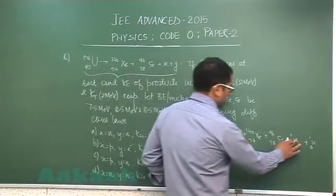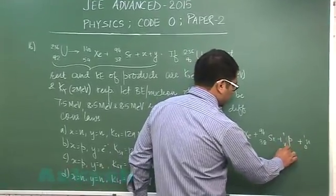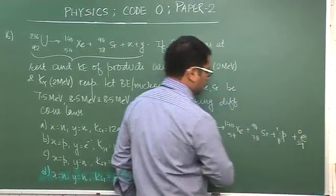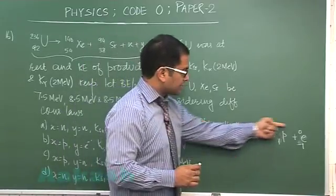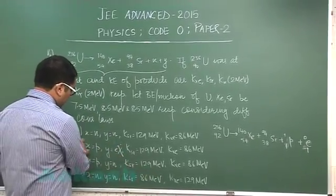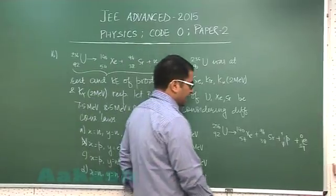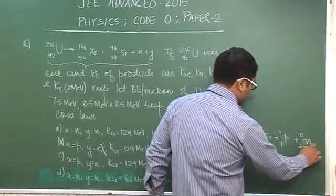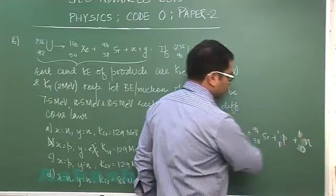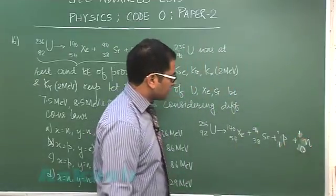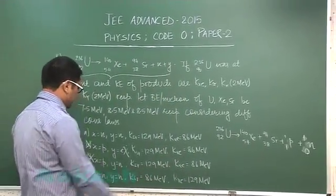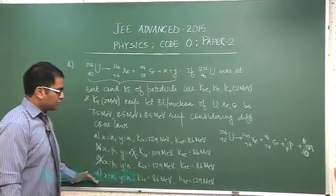For the second option — proton and electron — if it is a proton that gives one situation, and if it is an electron that gives charge −1, the superscripts do not balance, so this option is straight rejected. For option C — proton and neutron — p has charge 1 and n has charge 0, mass numbers are 1 each, and this also does not pass the conservation test, so it too fails. We are left with options A and D.